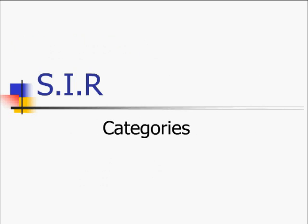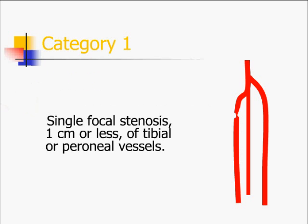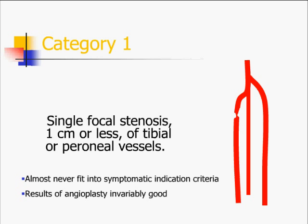Looking at SIL categories for lesions in the tibial vessels: Category 1 is a single focal stenosis of one centimeter or less of the tibial or peroneal vessels. These lesions generally do not require intervention, but they invariably do well with angioplasty when treated.